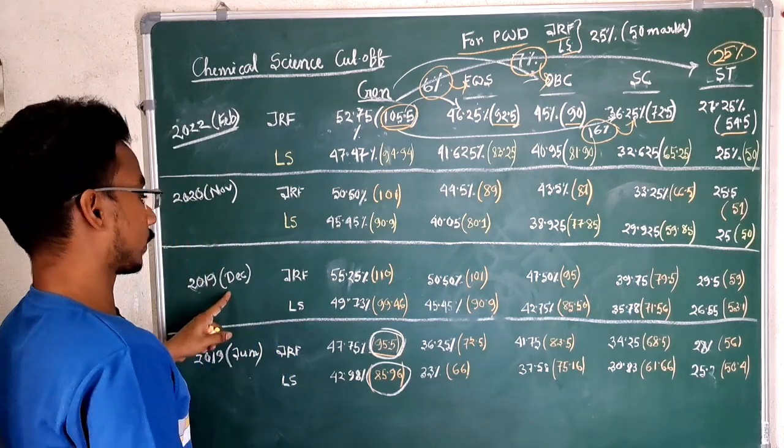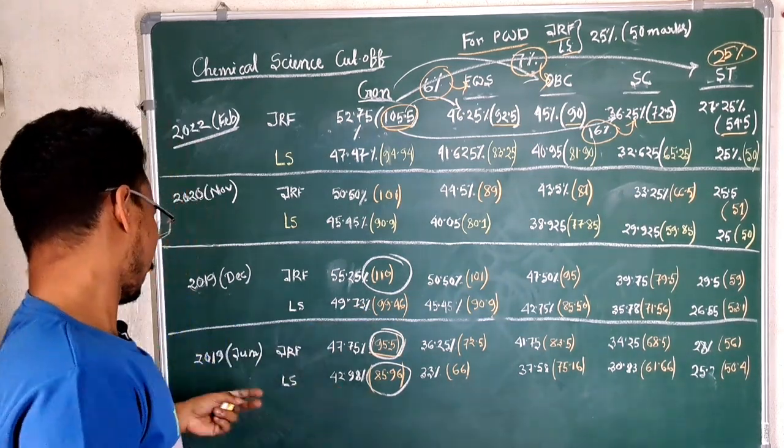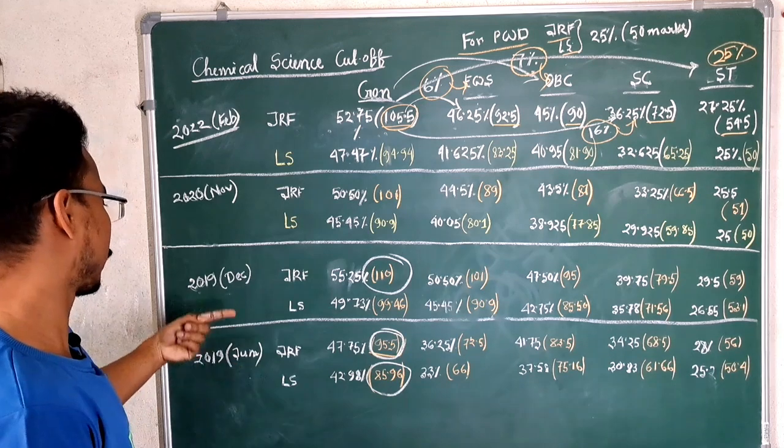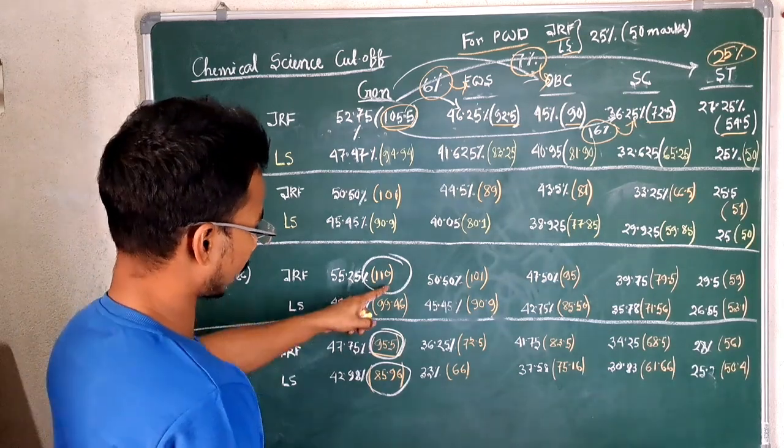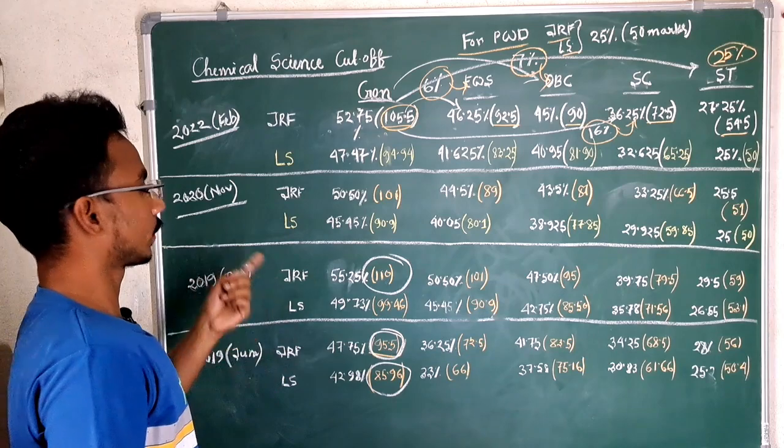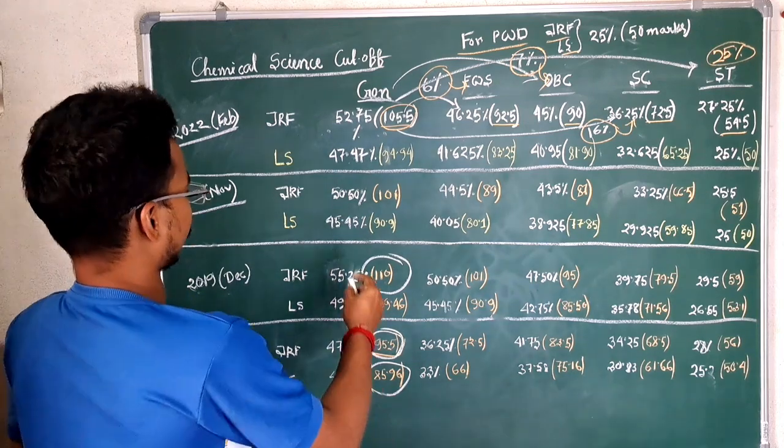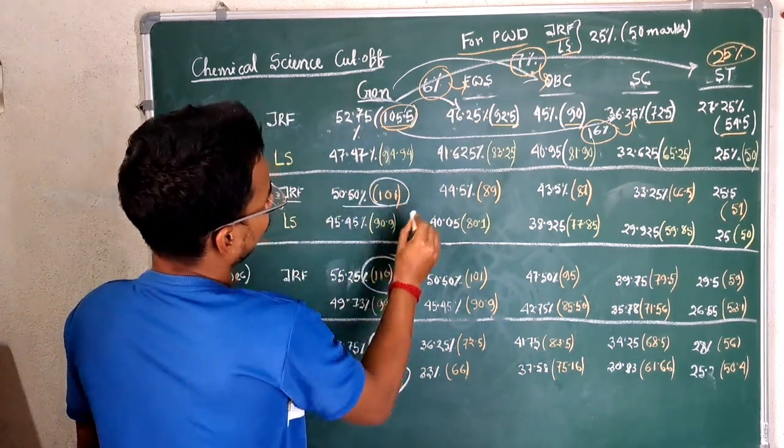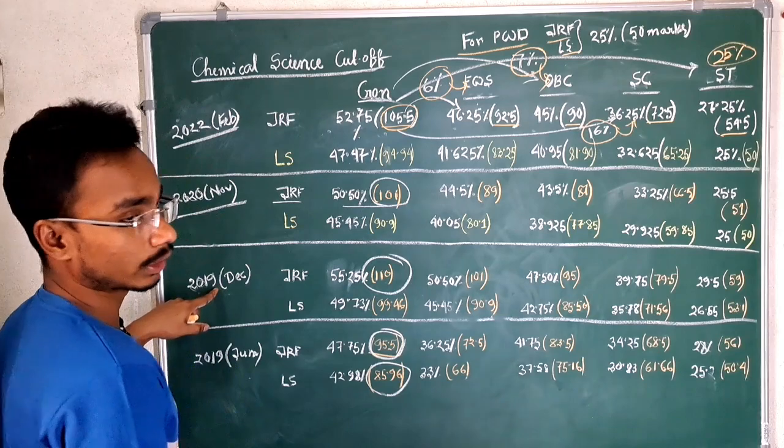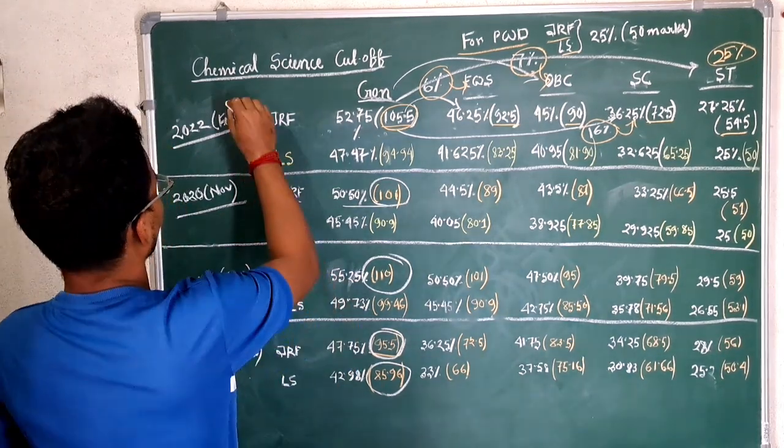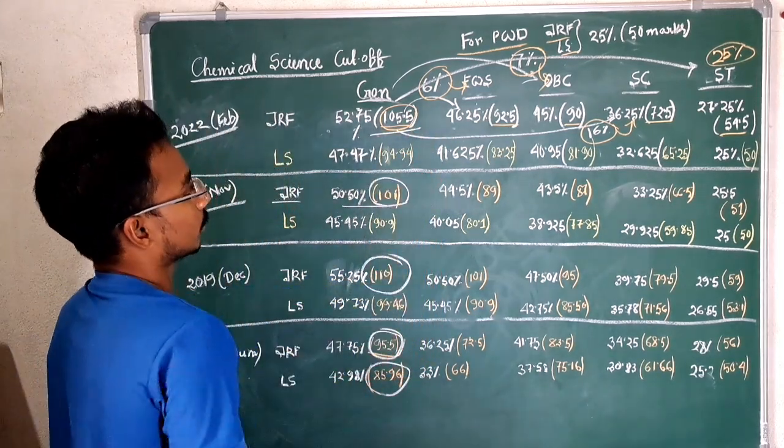And for 2019 December, the JRF cutoff is 110. You can expect that comparing with June month, December month, question paper was easier than this one. That's why cutoff goes high. Again, for November, that year only one CSIR happens because of Corona. And for the JRF is 101. Again, I think the question paper was a little bit hard than last one. And again, for last CSIR 2022 February, the JRF cutoff is 105.5. Little bit easier.